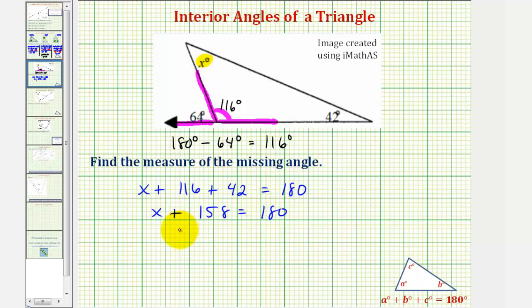And now to solve for x, we subtract 158 on both sides of the equation. So we have x equals 180 minus 158 is equal to 22. And therefore, the measure of the missing angle is 22 degrees.